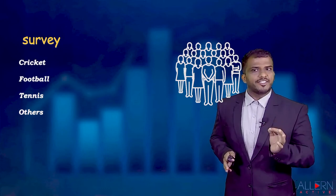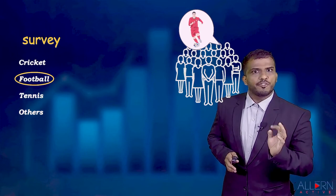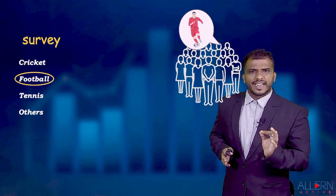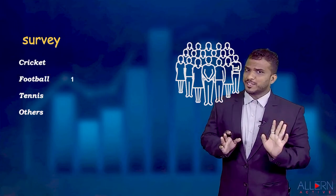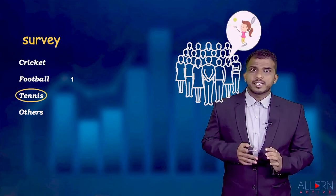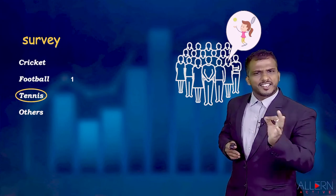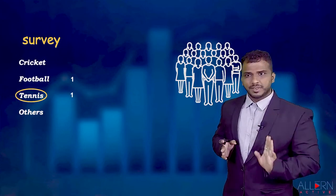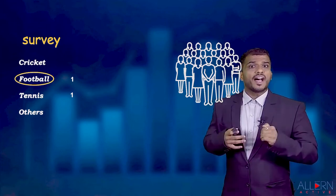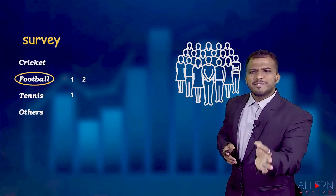We go and ask the first person what they like. They say football, so corresponding to the football column we write number one. The second person says tennis, so we write one corresponding to tennis. The next person says football again, so corresponding to football we write the second person's number.